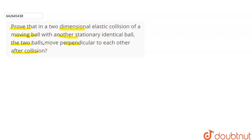What do we have? Two balls — both are identical as given in the question. One ball is moving and one ball is stationary. We have to show that after both balls collide, they move perpendicular to each other.